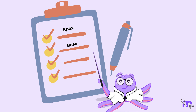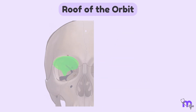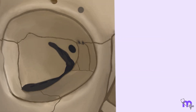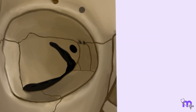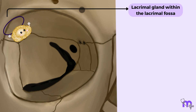Moving on to the roof of the orbit. You'll find the orbital part of the frontal bone forming the majority of the roof. The posterior portion accommodates the lesser wing of the sphenoid bone. The roof features the lacrimal fossa, which cradles the orbital part of the lacrimal gland.